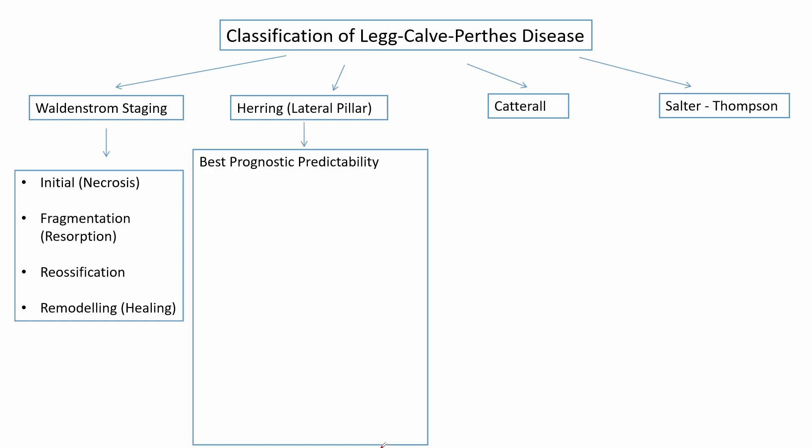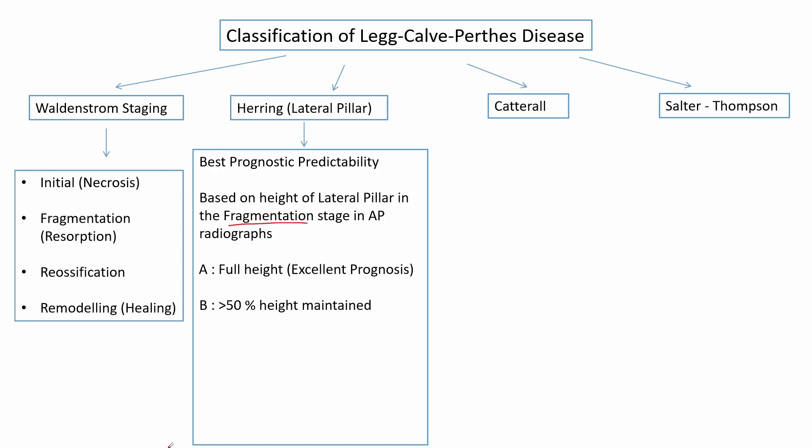The Herring lateral pillar classification has the best prognostic predictability among all the classification systems. It is based on the height of the lateral pillar in the fragmentation stage on an anteroposterior radiograph. On the basis of this height, it is divided into three types.